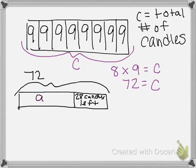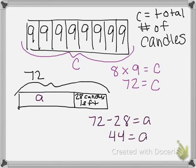Our equation will look like this. 72 candles total minus the 28 that we know he has left gives us A. 44 equals A. So Asmir has used 44 candles on his dad's birthday cake.